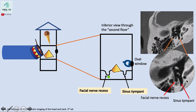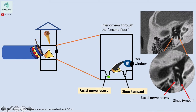Looking at the pyramidal eminence, it contains something special: soft tissue density within the pyramidal eminence. This is the stapedius muscle — specifically the tendon and belly of the stapedius muscle.